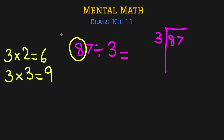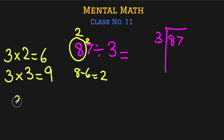We write down 2, then subtract 6 from 8 in our brain — 8 minus 6 equals 2. We bring that 2 alongside the 7, making 27. Now divide 27 by 3: from the multiplication table, 3 times 9 is 27, so the answer is 9. Our final answer is 29.